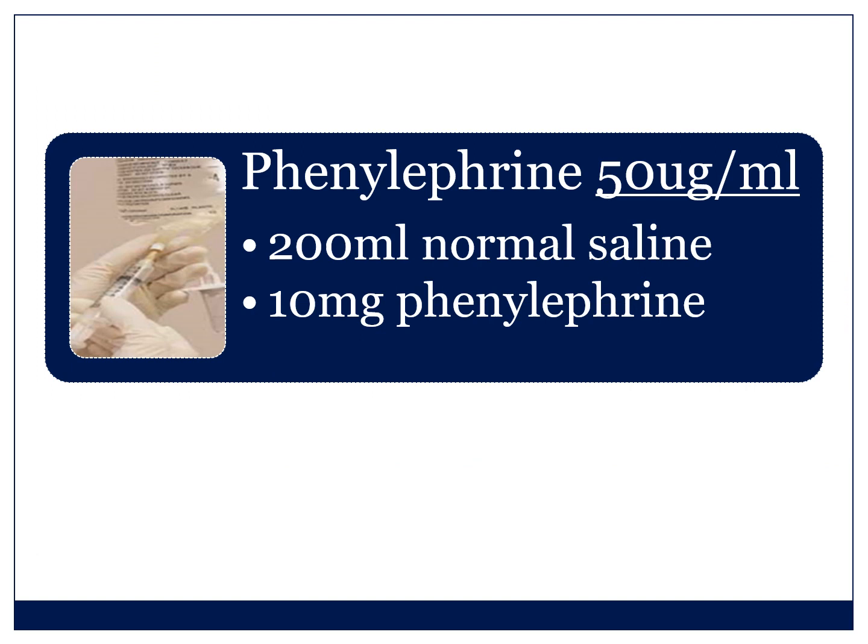When you mix phenylephrine — and this applies to all infusions — you take 200ml normal saline and add one amp, which is 10 milligrams of phenylephrine. That gives you 50 micrograms per milliliter. When I talk about infusion rates, this is the solution I'm assuming you're using. I wouldn't advise mixing it differently because you'll run into drug errors, and phenylephrine is one of those drugs where you really don't want a drug error. If you give a whole amp of phenylephrine as a single bolus, that is going to be a lethal dose. Diluting the phenylephrine is very, very important.